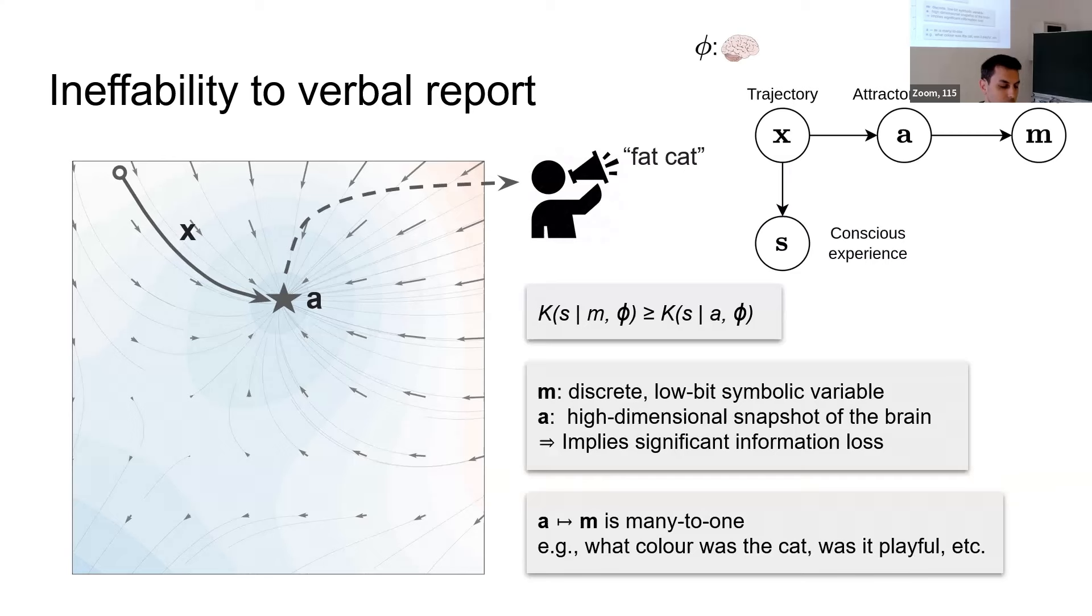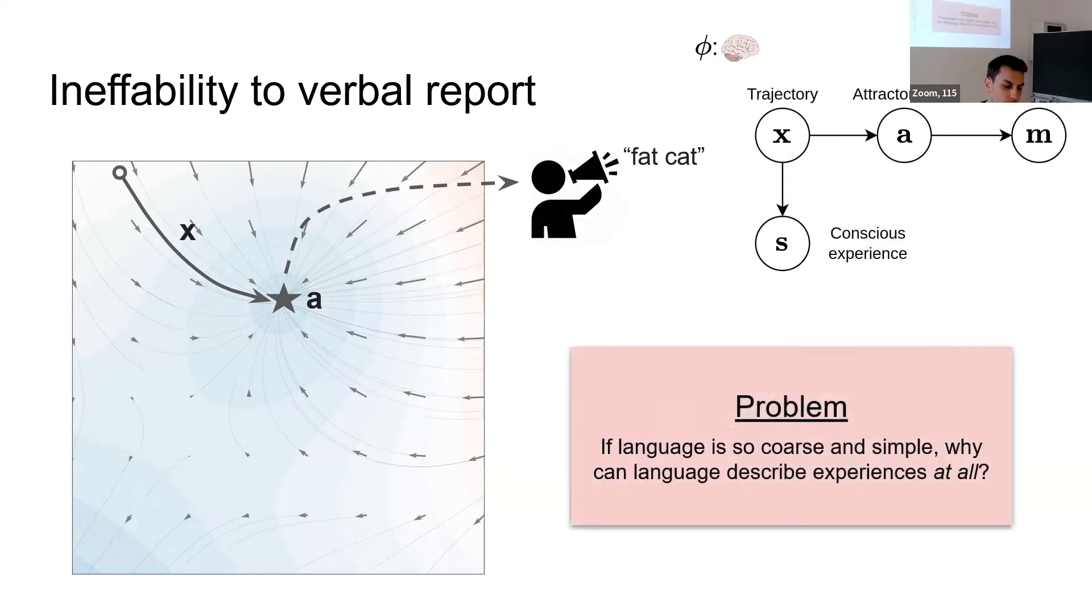And then similar arguments where A to M is many to one. I might describe some experiences. I saw a fat cat. I'm obviously leaving out details that I was aware of and that I remember, like what color it was. Here I want to flag this kind of, maybe you see it as a contradiction, maybe you don't, but if language is so coarse and simple, why could it describe experiences at all? And this also helps if you consider the attractor dynamics picture.